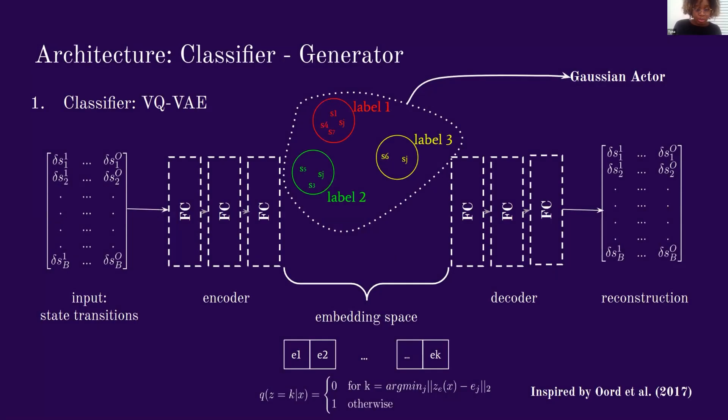The first submodel that we have is a VQVAE inspired by Ord et al. from 2017 with a small modification. The VQVAE has the objective of distilling its inputs, which are state transitions, well enough that the decoder can reconstruct them. In the middle here, you see an embedding space which maps the encoder representations to clusters via a simple argmin function. That is, if a tensor is closest in Euclidean distance to embedding tensor J, then map that sample to cluster J.